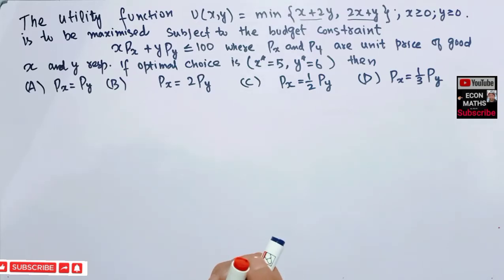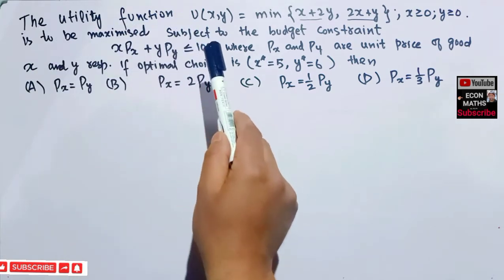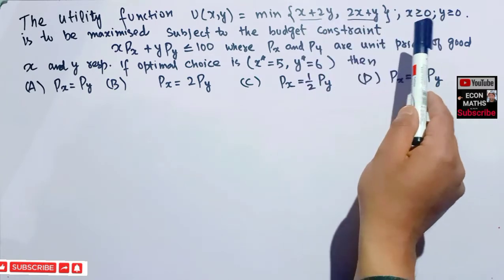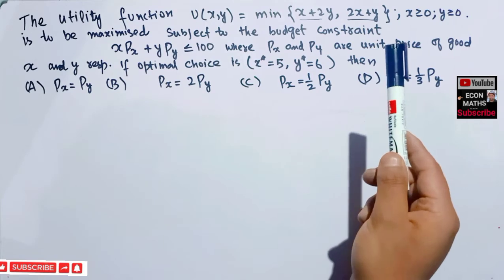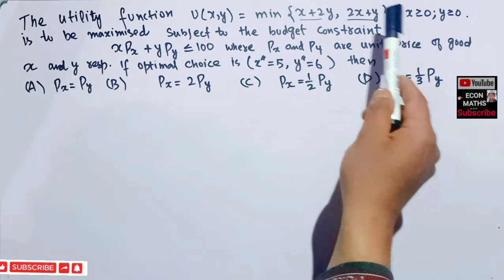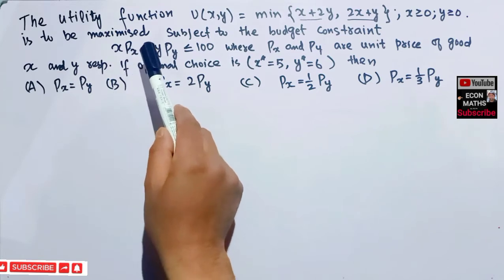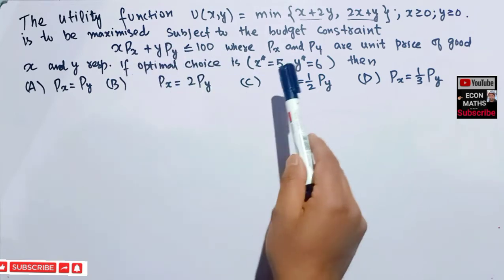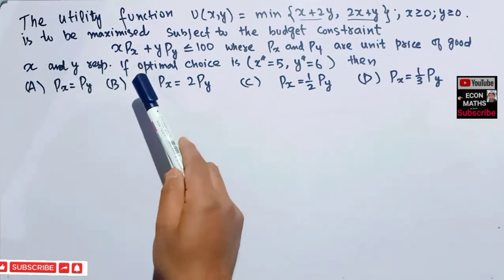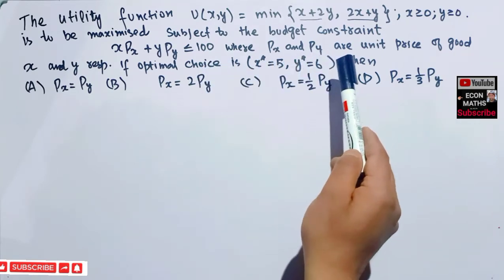In this video we will try to solve a question on constraint optimization. The utility function U(x,y) = min(x+2y, 2x+y), where x and y are greater than or equal to 0, is to be maximized subject to the budget constraint x·px + y·py ≤ 100. The optimal choices given are x* = 5 and y* = 6.